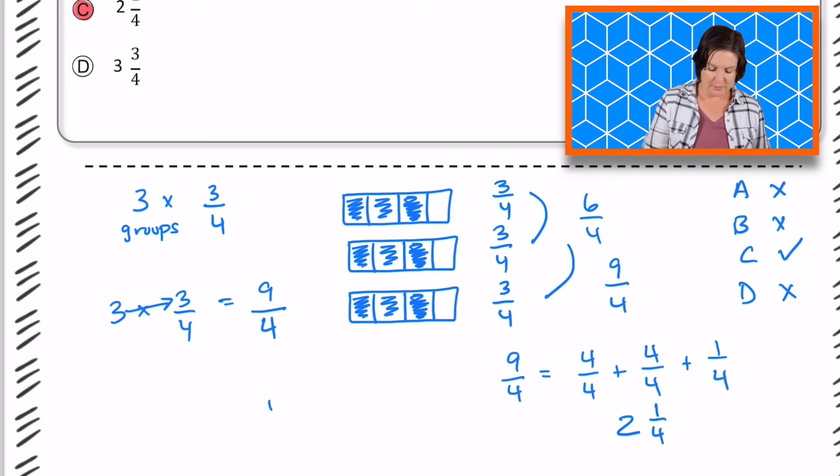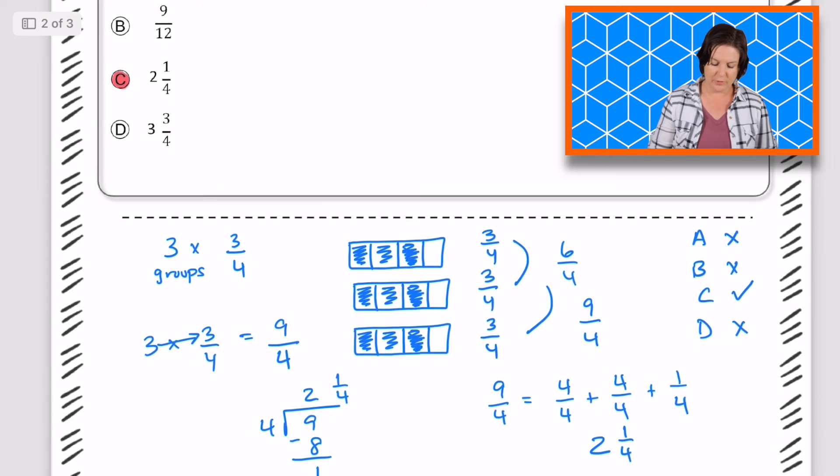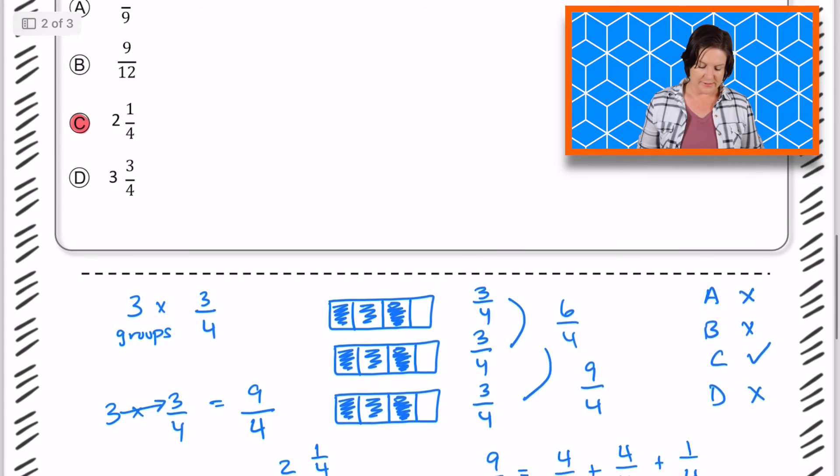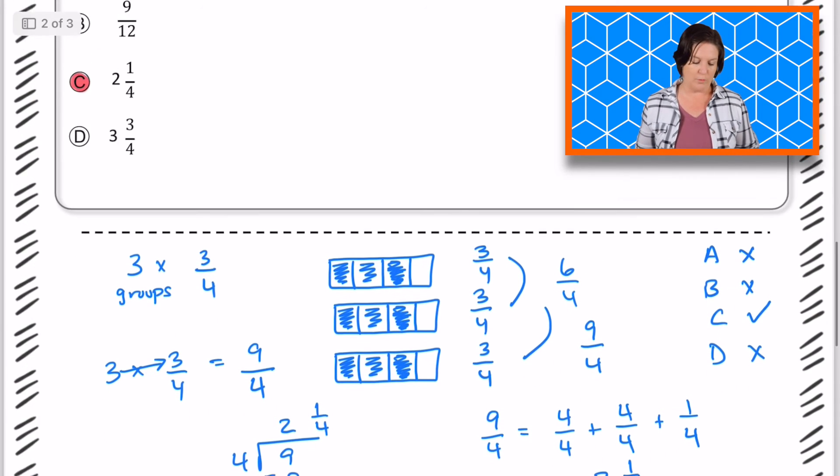You could also change it into a mixed number like this by creating a division expression. And we know that four goes into nine two times, which would be a remainder of one fourth. Well, a remainder of one, or written in a fraction as 1/4. So that is a couple different ways there to solve that one.